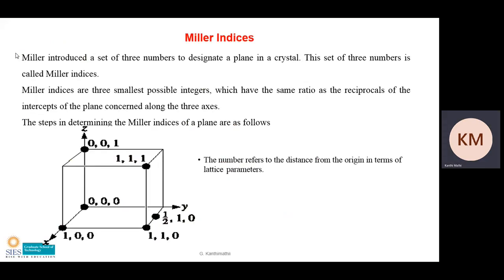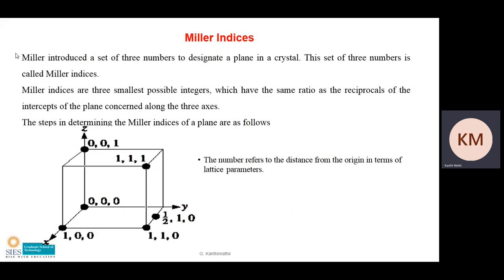Miller used three numbers to designate a plane, and these three numbers are called Miller indices. By definition, Miller indices are the three smallest possible integers that have the same ratio as the reciprocals of the intercepts of the plane concerned along the three axes.